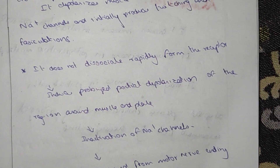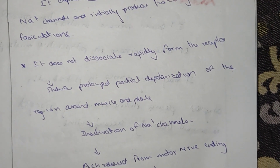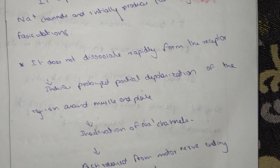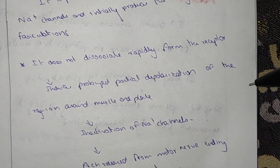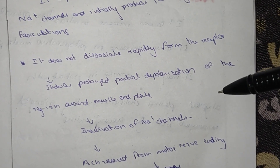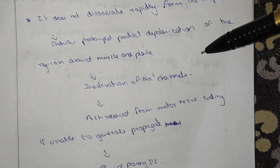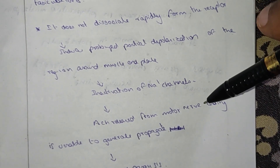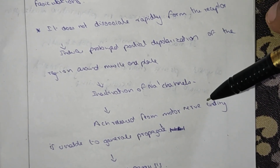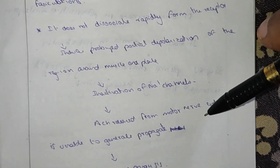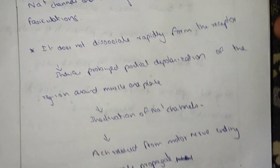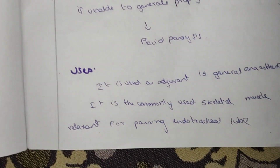After binding to the nicotinic receptor, it does not rapidly dissociate. This induces prolonged partial depolarization of the region around the muscles and inactivation of the Na+ channel. ACh is released at the motor nerve ending but is unable to generate and propagate an action potential, resulting in flaccid paralysis.